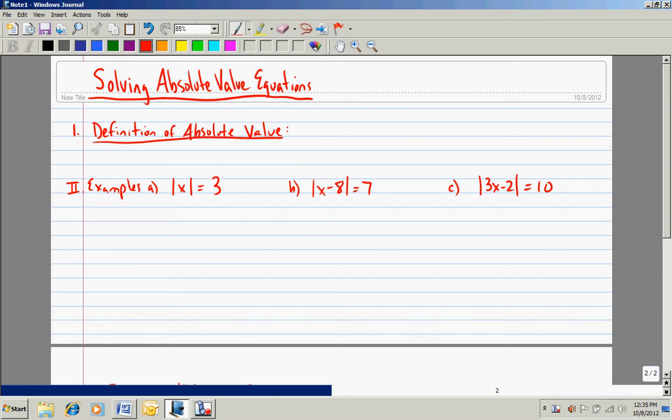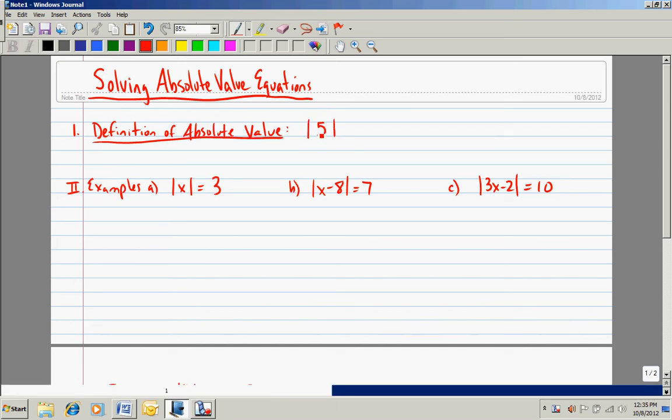I'd like to start off today by talking about the definition of absolute value. You've all seen the symbols before. The bars on either side of a value mean the absolute value of 5. Well, essentially what this means is what is the distance from 0 of the number inside the absolute value bars. What is the distance from 0? And typically if you think of a number line, that's the easiest way to consider the answer to an absolute value problem.